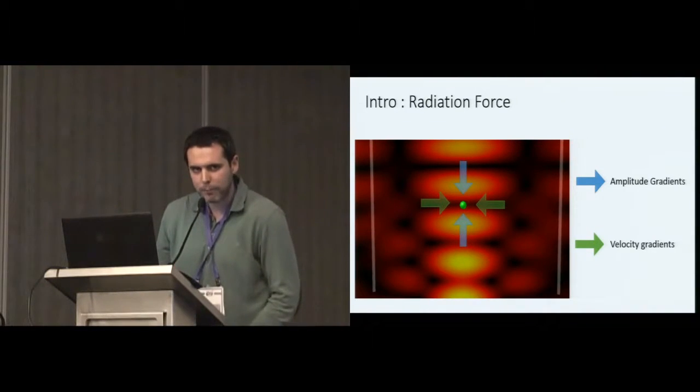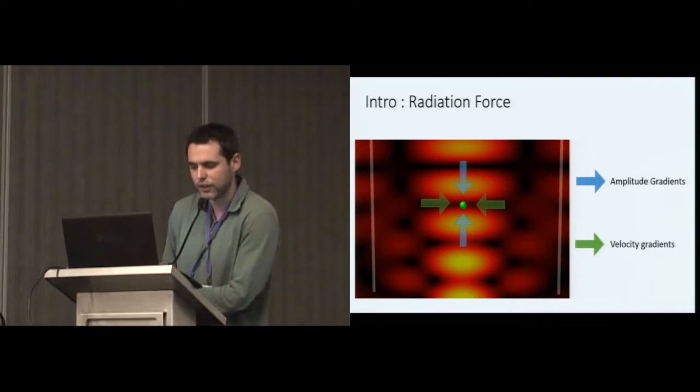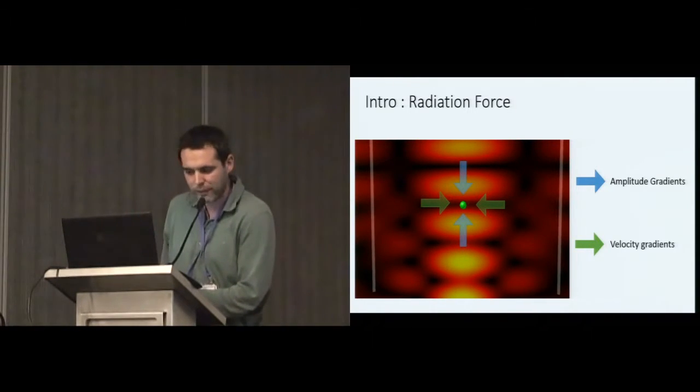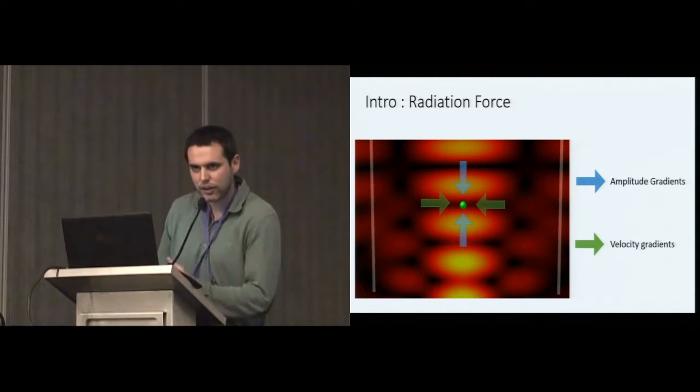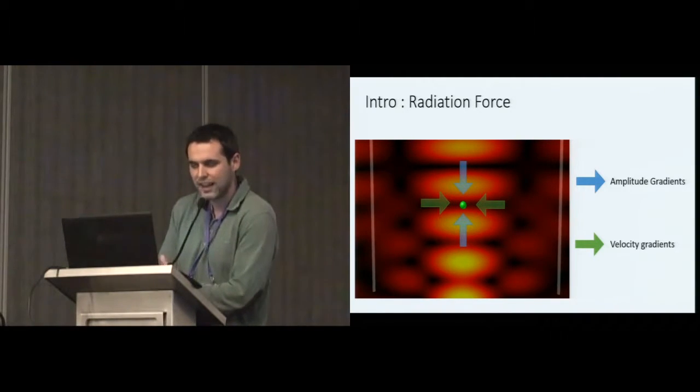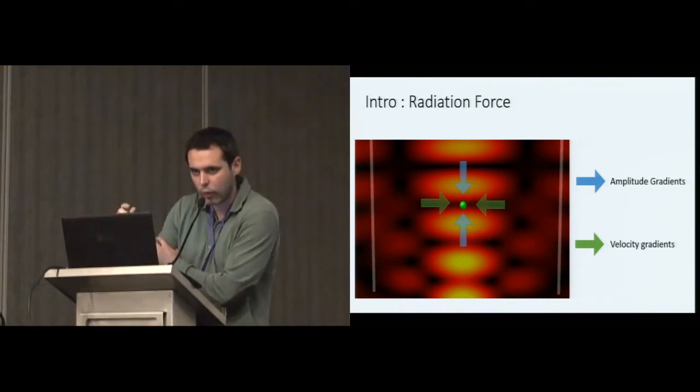So you may be asking, like, why particles levitate in an acoustic field? And I wouldn't go into details, but basically, there is something called radiation force. And the radiation force pushes particles that are inside an acoustic field. There are two main forces. One is the amplitude gradients, which is represented by the blue arrows. And you have also the velocity gradients, which are represented by the green arrows. Amplitude gradients, they are very easy to understand. Basically, the particles will be pushed from high amplitude regions to low amplitude regions. And the velocity gradients, they are a little bit more complicated. But basically, if you have a curved structure, the particles will try to go to the narrowest point.